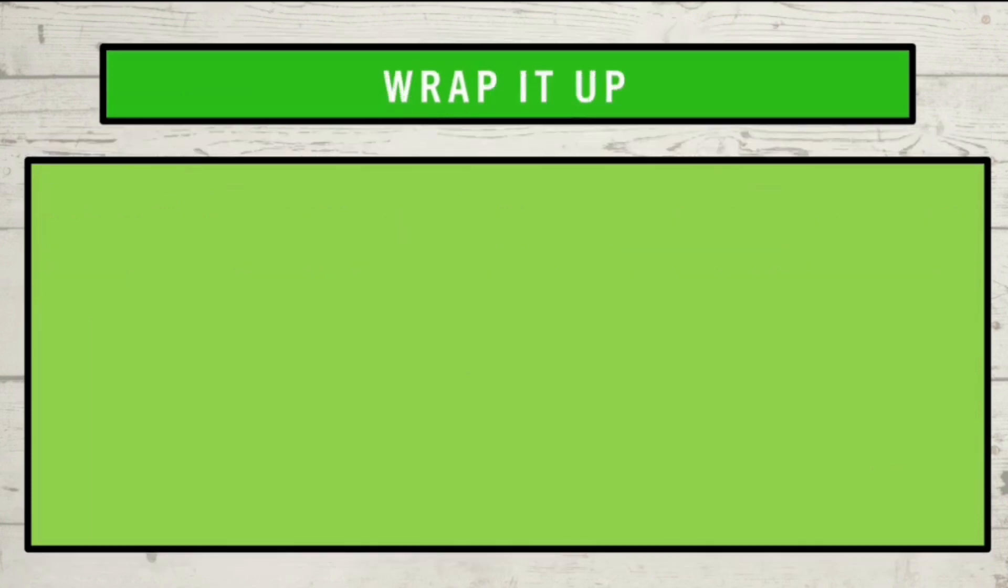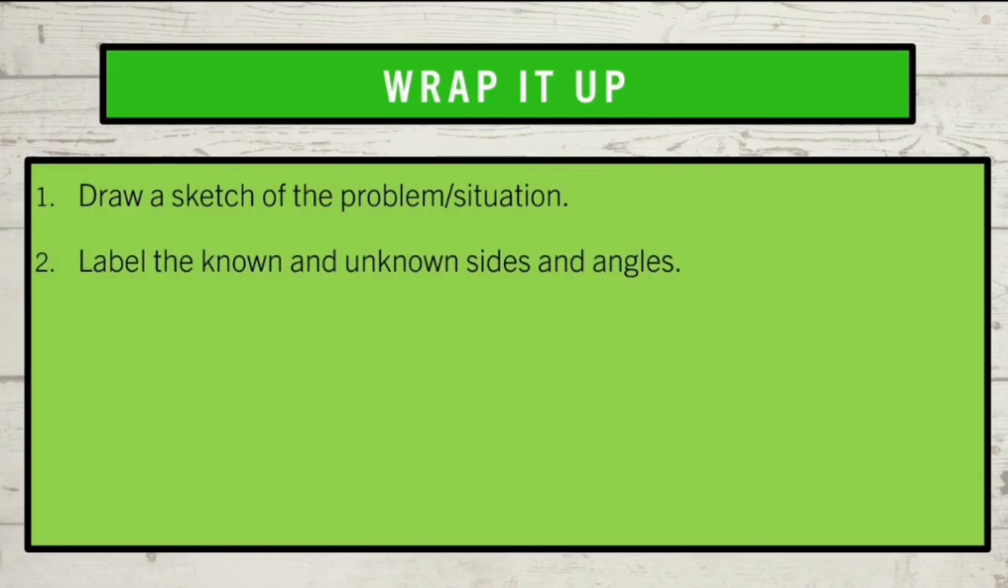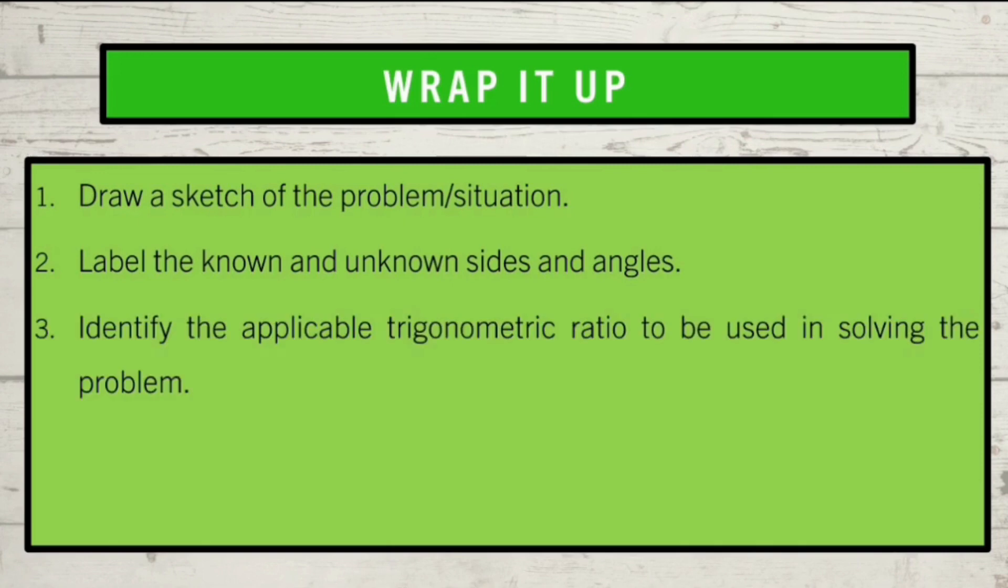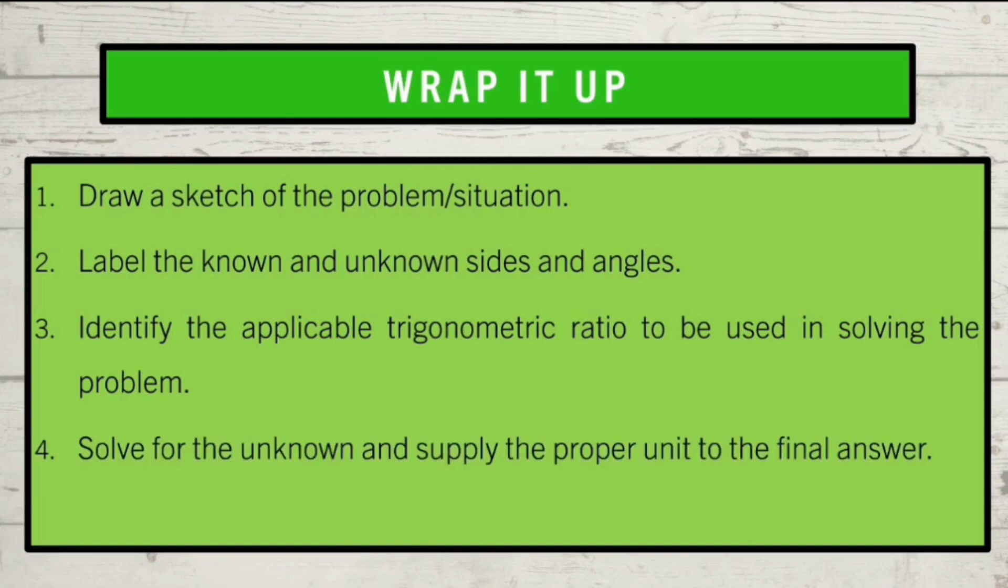To summarize our lesson, let us enumerate again the steps in solving real-life problems involving right triangles using the trigonometric ratios. First, draw a sketch of the problem or situation. Second, label the known and unknown sides and angles. Third, identify the applicable trigonometric ratio to be used in solving the problem. Fourth, solve for the unknown and supply the proper unit to the final answer. And fifth, check if necessary.